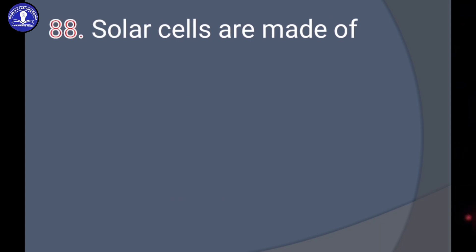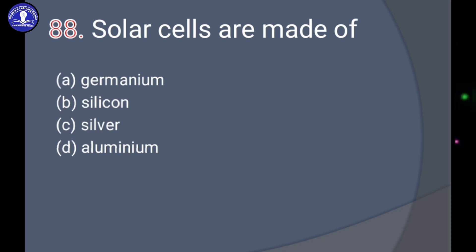Next question: Solar cells are made of germanium, silicon, silver, or aluminium. The answer is silicon. It is a semiconductor with atomic number 14. It is very easy to handle and also a semiconductor material.